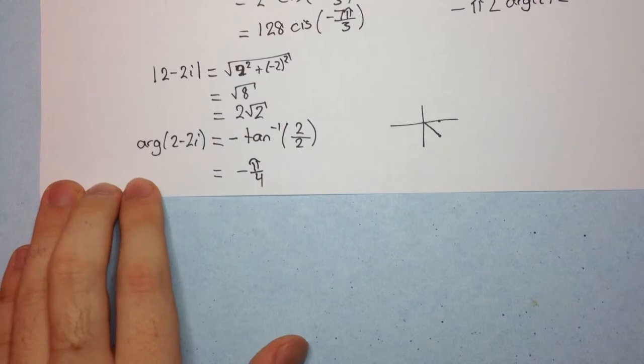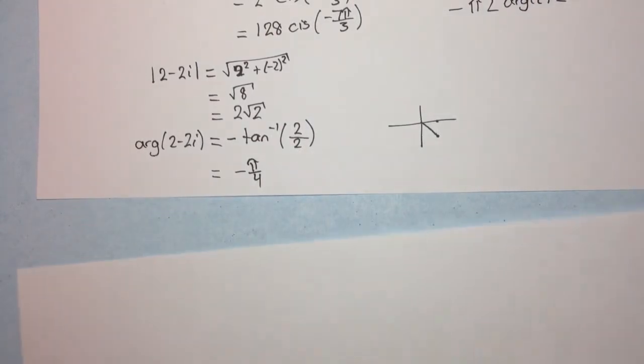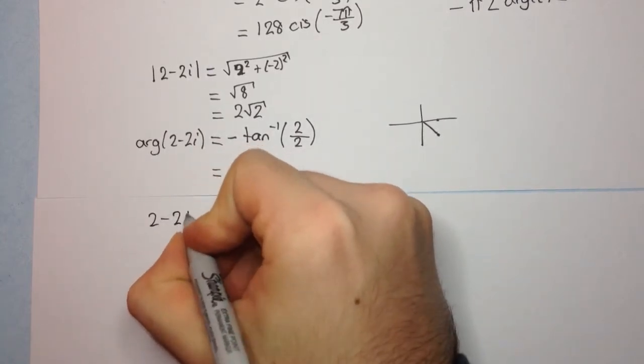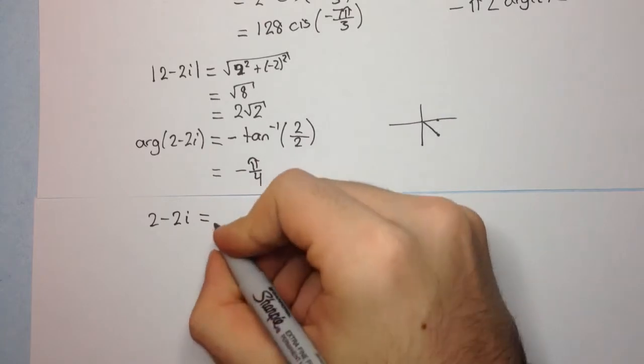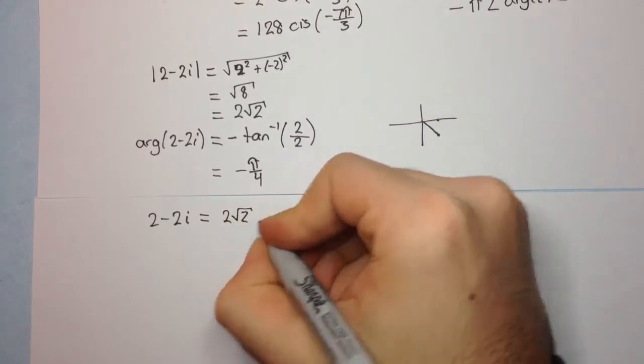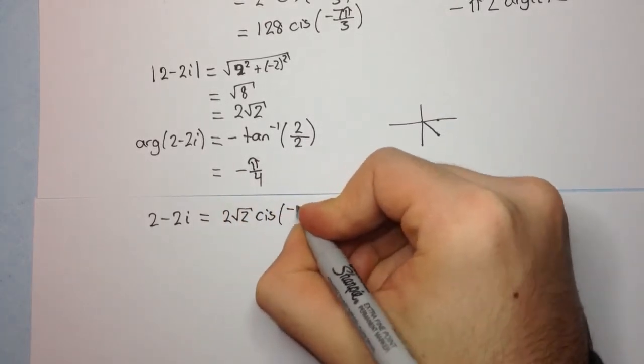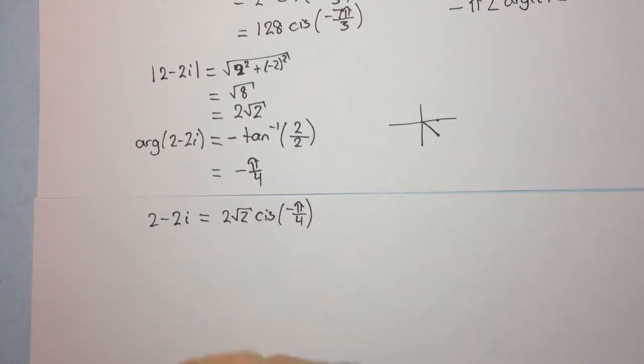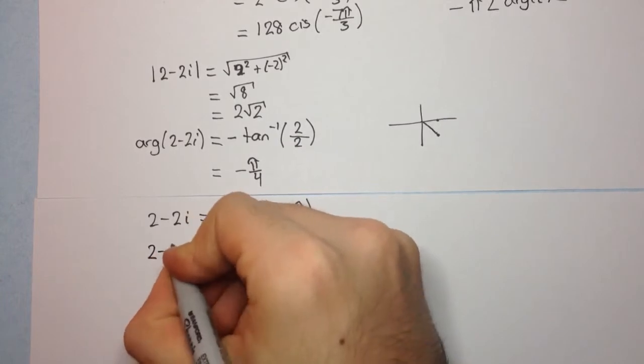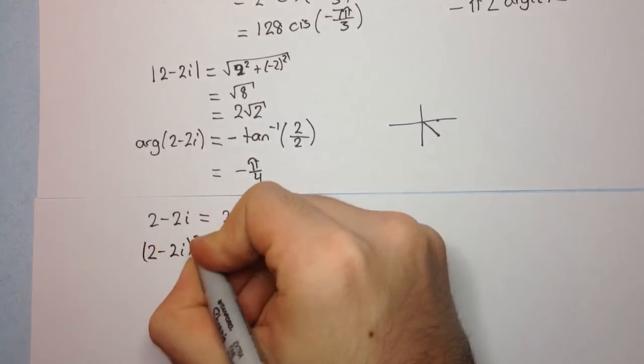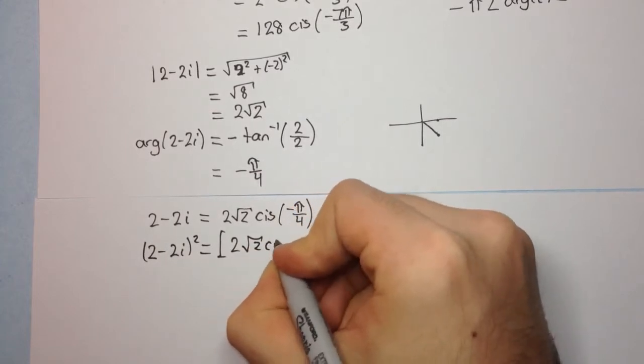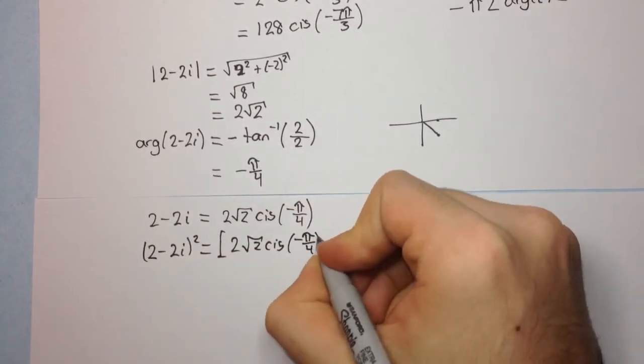So now that we have the modulus and the argument, we can write 2 - 2i is equal to 2√2 cis(-π/4). Now we need to work out (2 - 2i)^2, so that's going to be equal to [2√2 cis(-π/4)]^2.